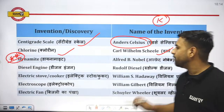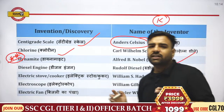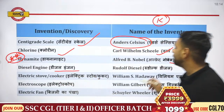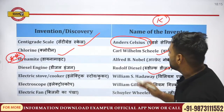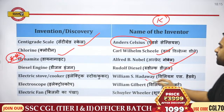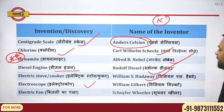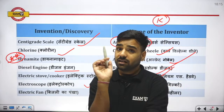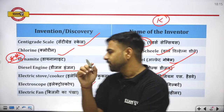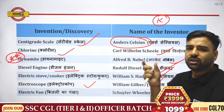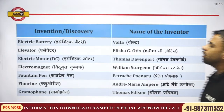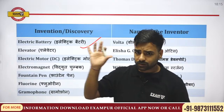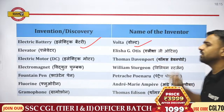Diesel engine was invented by Sir Rudolf Diesel — you can get it from the name itself. Electric stove and cooker were discovered by William S. Hadaway. Electroscope was discovered by William Gilbert. For electric fan — in the center of a fan there is a wheel-like structure, so remember Wheeler — Wheeler discovered the electric fan. Electric battery was discovered by Volta, from which we get volts and voltmeter.